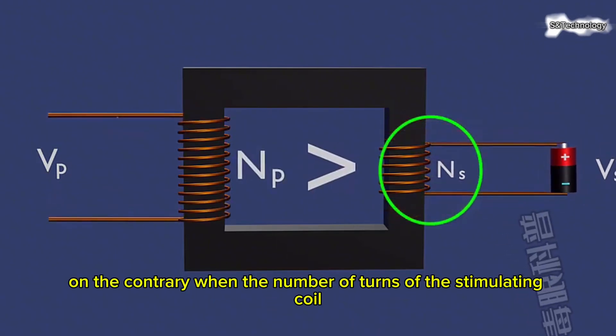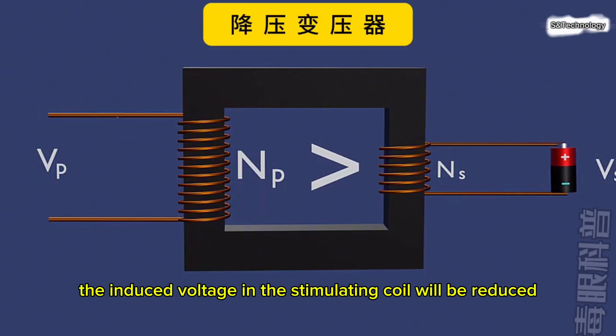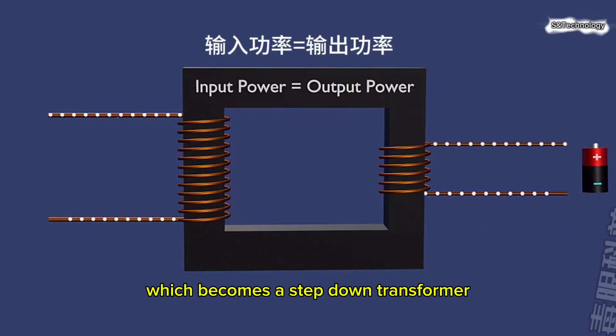On the contrary, when the number of turns of the secondary coil is less than that of the primary coil, the induced voltage in the secondary coil will be reduced, which becomes a step-down transformer.